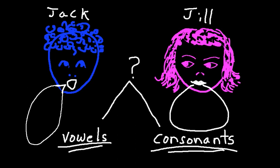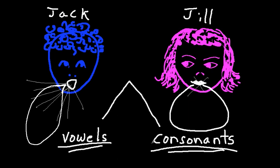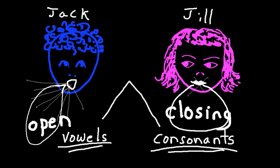It turns out that is the difference between vowels and consonants. Vowels are open sounds — your mouth is open when you're saying them, and you can actually yell a vowel and it's loud. But when you say a consonant like M, B, D, or CH, you can't yell it, because something's closing. So the difference between vowels and consonants is that vowels are open sounds and consonants have something that's closing.